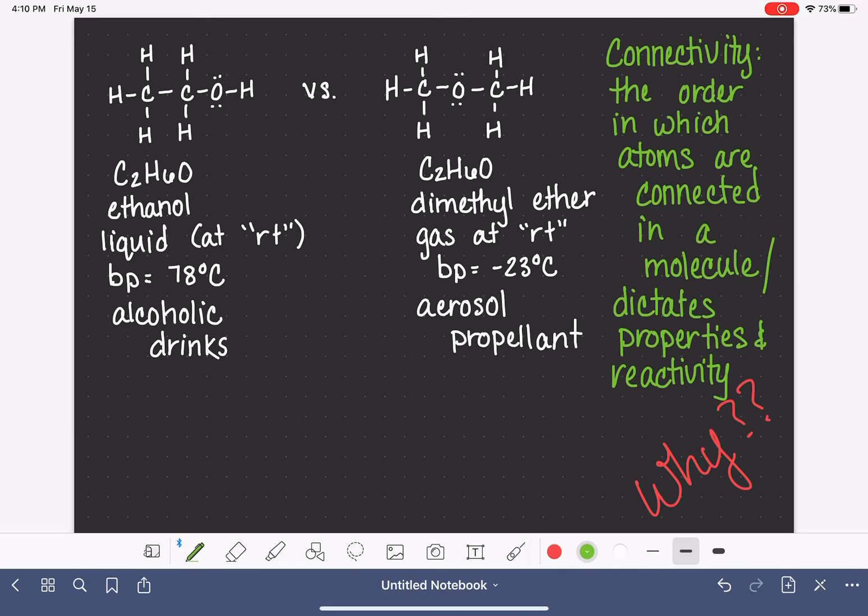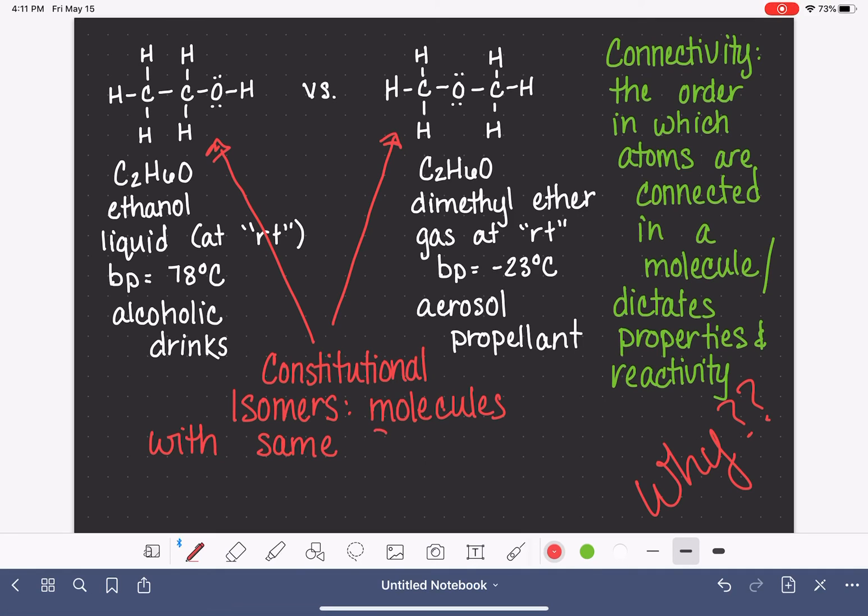Now, even though these two molecules are different from each other, despite the fact that they have the same molecular formula, they do have a relationship. They're not identical molecules, but their relationship is one that we call constitutional isomers. So we would say these two molecules are constitutional isomers of each other. And that means constitutional isomers are molecules with the same formula, the same molecular formula, but different connectivity. And we'll look at some more examples of that on the next slide.